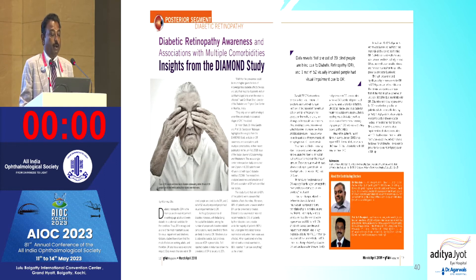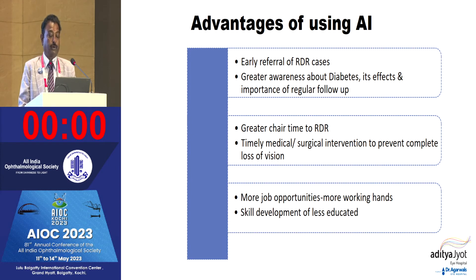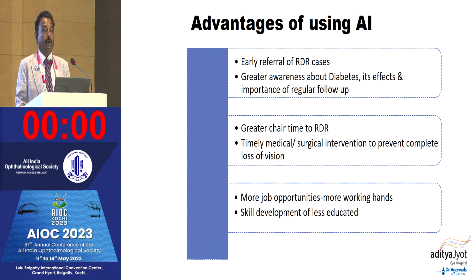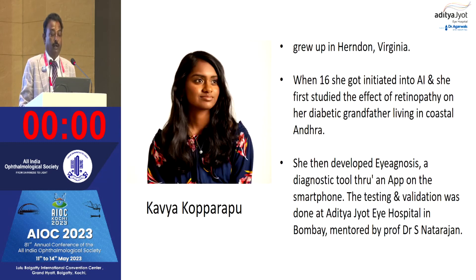Despite including poor quality images, the sensitivity and specificity of detecting referable diabetic retinopathy using AI were 100% and 89.55% respectively. We also collaborated with a diabetologist and endocrinologist, publishing the DIAMOND study on diabetic retinopathy awareness and association with multiple comorbidities. Advantages of using AI include early detection of referable diabetic retinopathy, greater awareness about diabetes, more time for the eye doctor to see the patient, timely medical and surgical intervention, and more job opportunities.